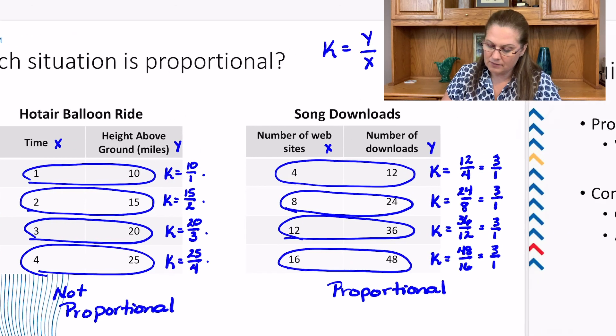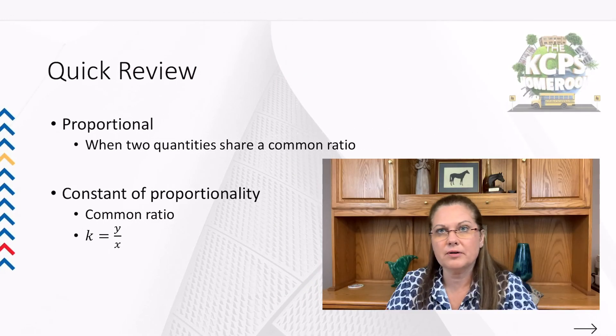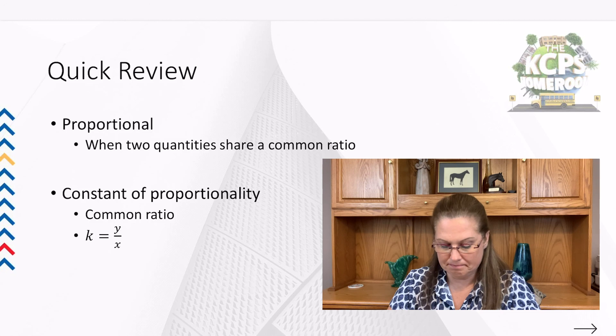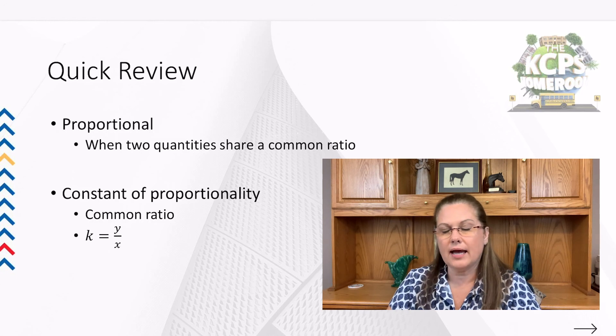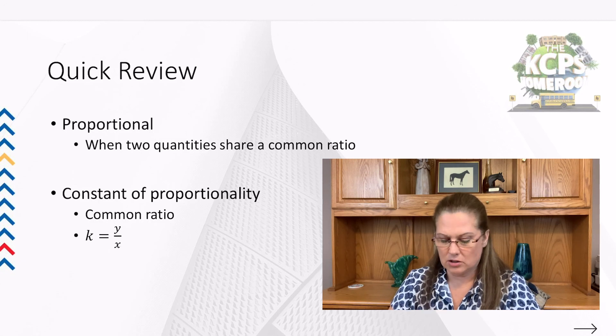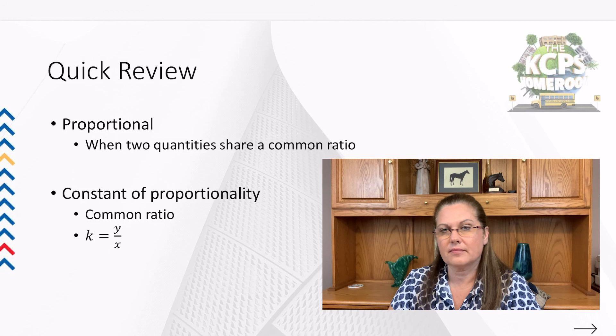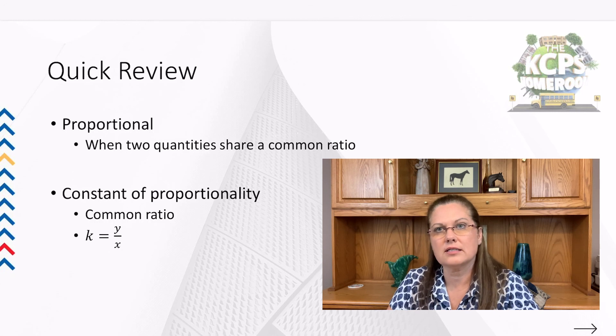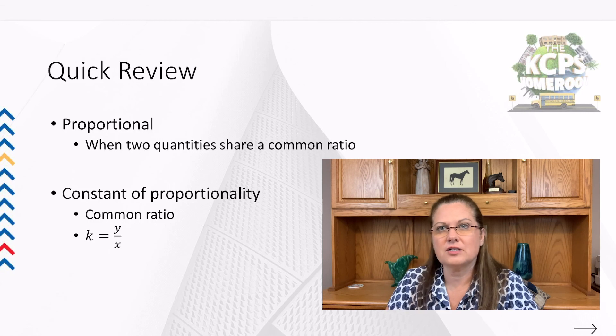That concludes our lesson for today, so let's take a quick review before we end. Proportionality means two quantities share a common ratio. Constant proportionality is what that ratio is called. And we have an equation for constant proportionality, which is k is equal to y over x. Thank you for joining me today, and remember to work on your proportions this week so you can continue to improve. It's been my pleasure having you in class today. I'm Mary Jo Fender, and I'll see you next week.